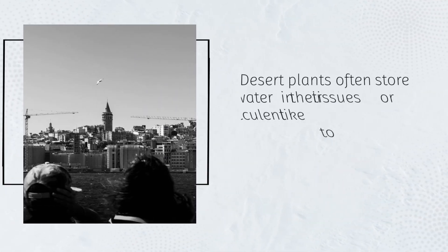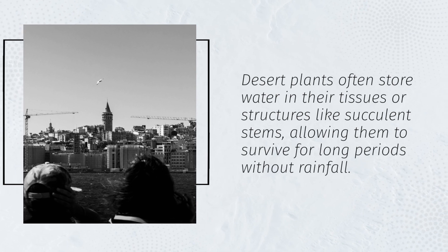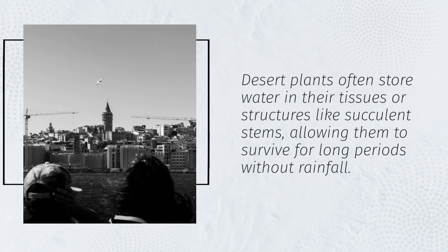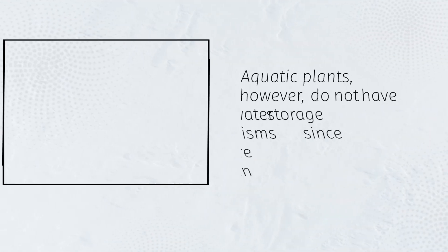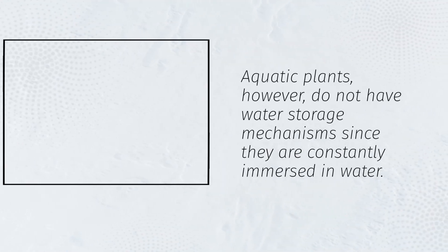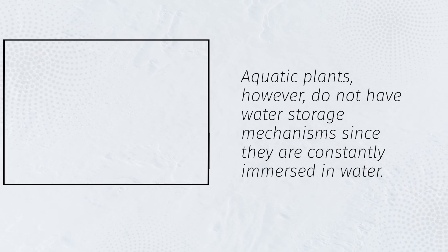Desert plants often store water in their tissues or structures like succulent stems, allowing them to survive for long periods without rainfall. Aquatic plants, however, do not have water storage mechanisms since they are constantly immersed in water.